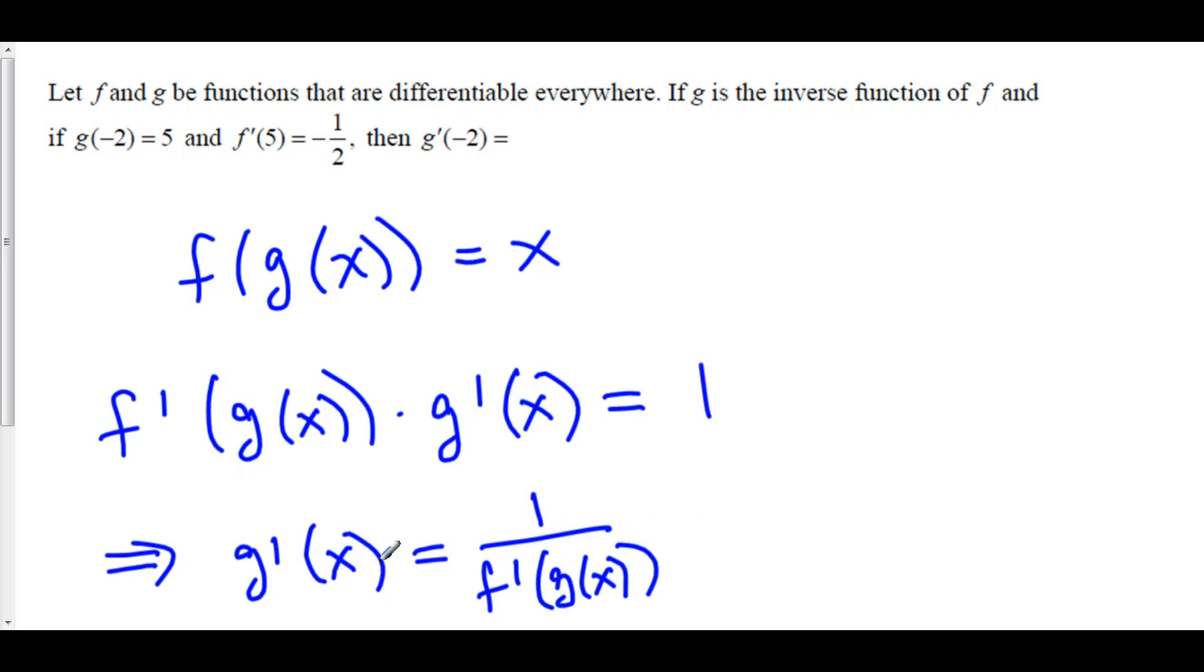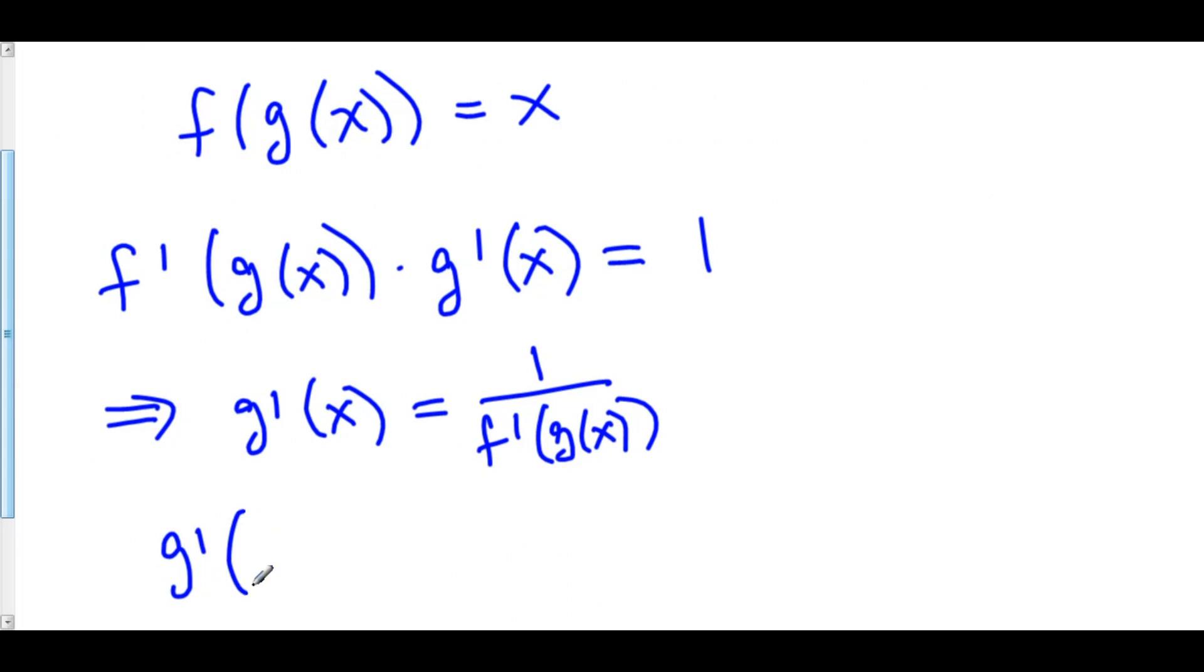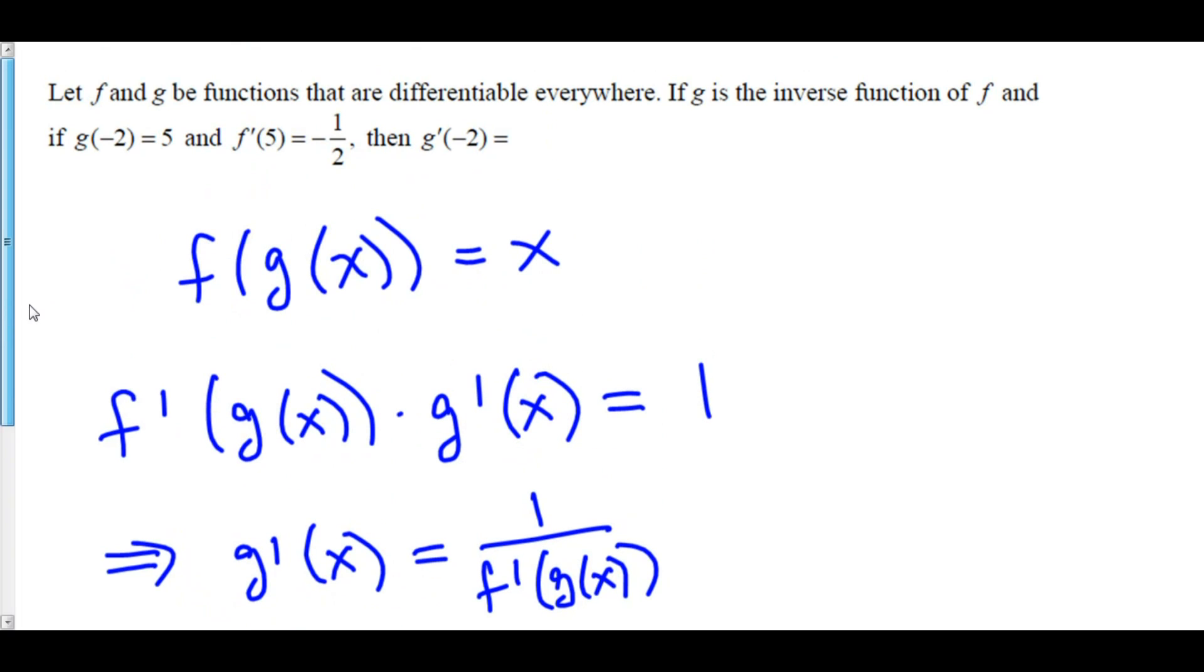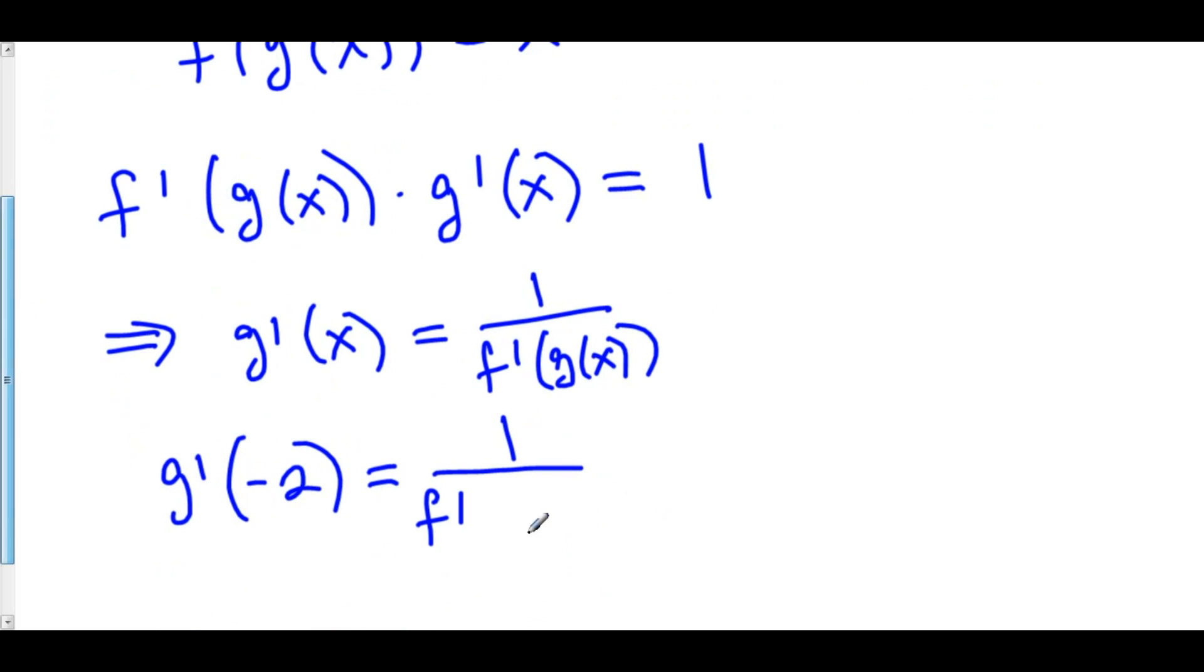But we want to find g prime of negative 2. Well, that means that g prime of negative 2 is equal to 1 over f prime of g of negative 2. g of negative 2, they told us, is 5. So this is f prime of 5.